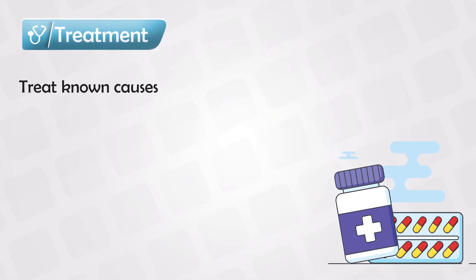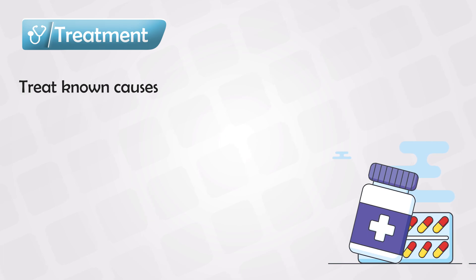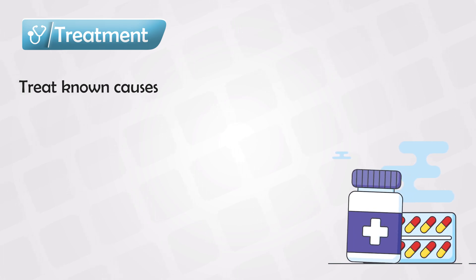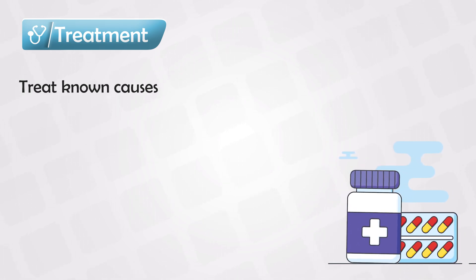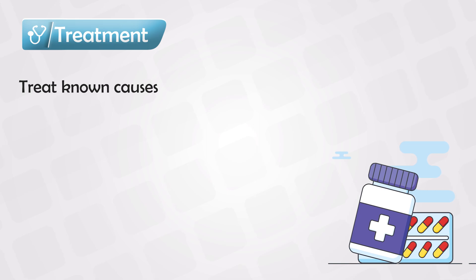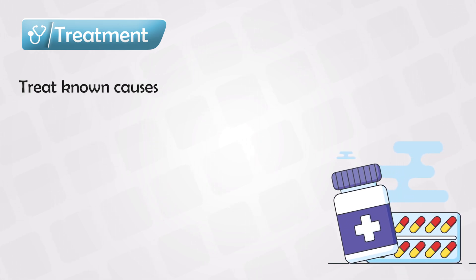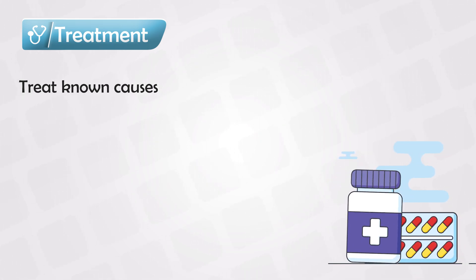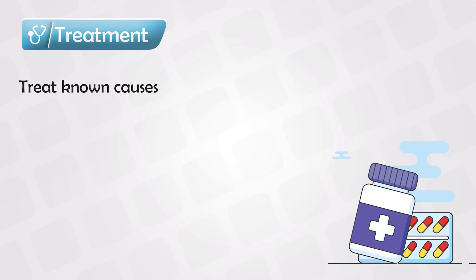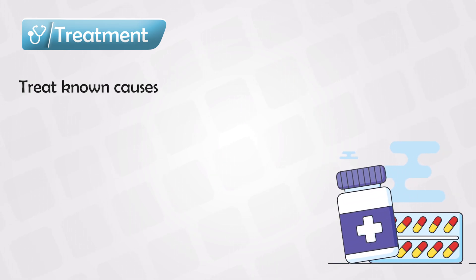The treatment goes as follows. If there is a specific cause of the heart failure, like an infection for example, it has to be treated. Sometimes the cause is simply arrhythmia or some toxins, and this is the simplest to treat — by simply reversing the cause, you treat the heart failure.